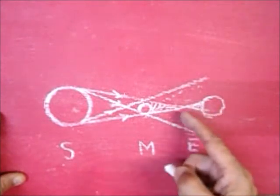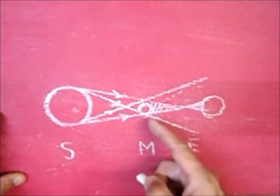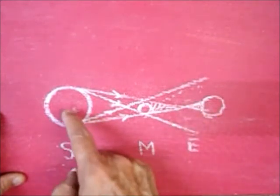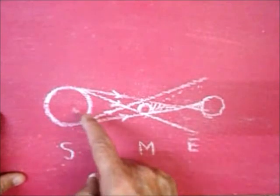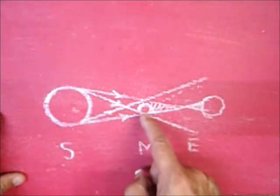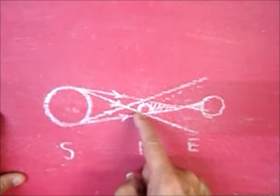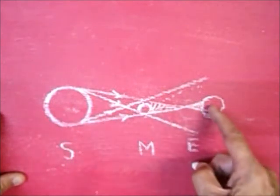annular eclipse, and hybrids of these, depending on the position of the Earth. Solar eclipse occurs on a new moon day when the Sun, the Moon, and the Earth